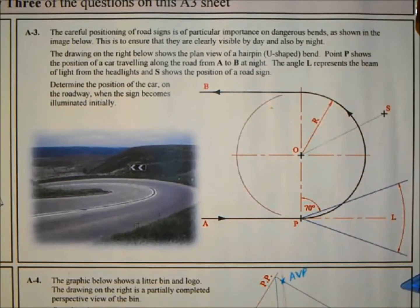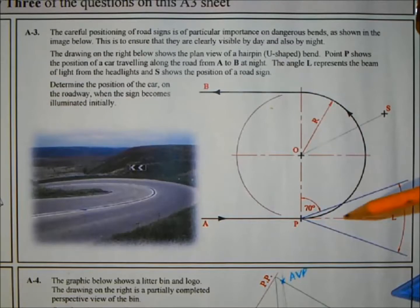Rather than trying to rotate the car around first and work with the angles of the beam, I'm going to rotate the sign around to where the car is to represent where the sign would be in the beam of light if point P was there and S was rotated down to meet it.